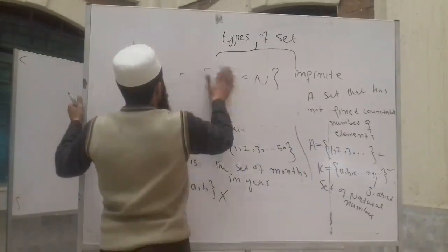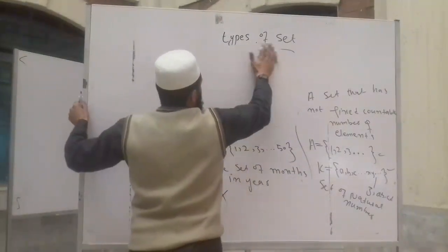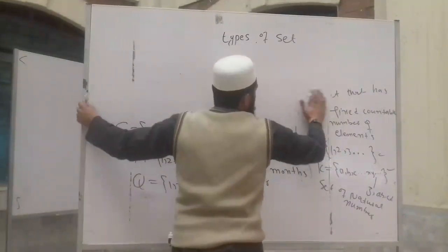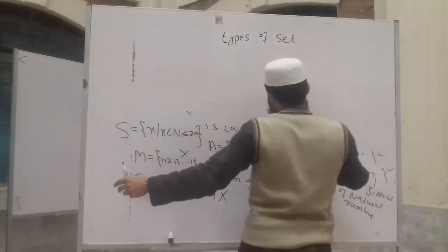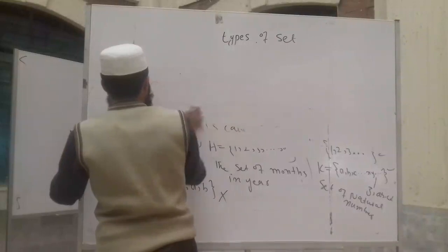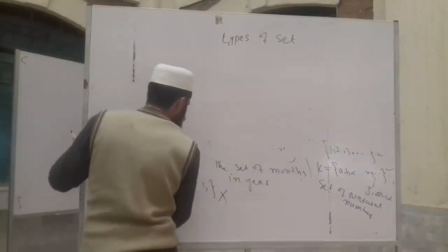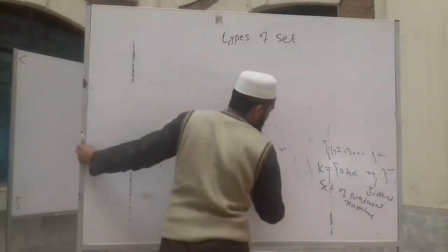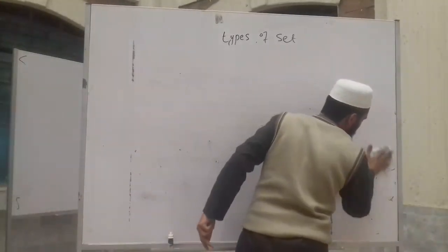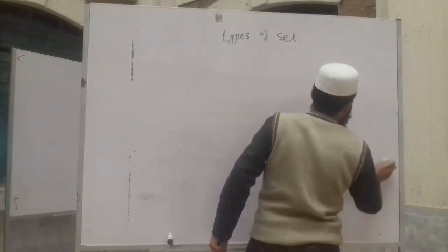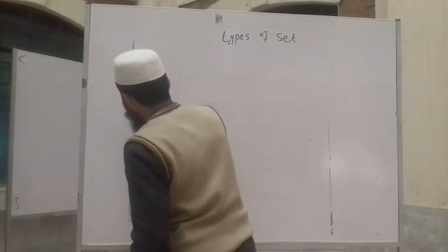The types of sets include: empty set, null set, universal set, disjoined set, overlapping set, subset, proper subset, and improper subset.